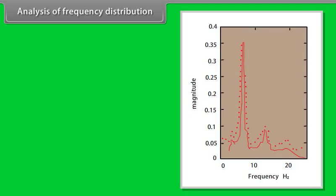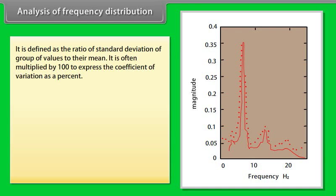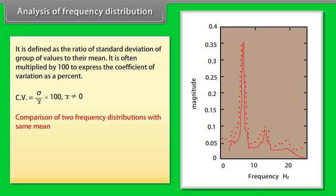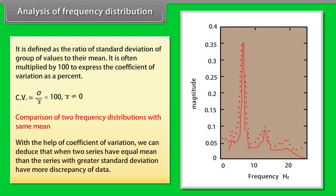Coefficient of variation is defined as the ratio of standard deviation of a group of values to their mean, multiplied by 100 to express it as a percent. When two series have equal mean, the series with the greater standard deviation has more discrepancy of data.